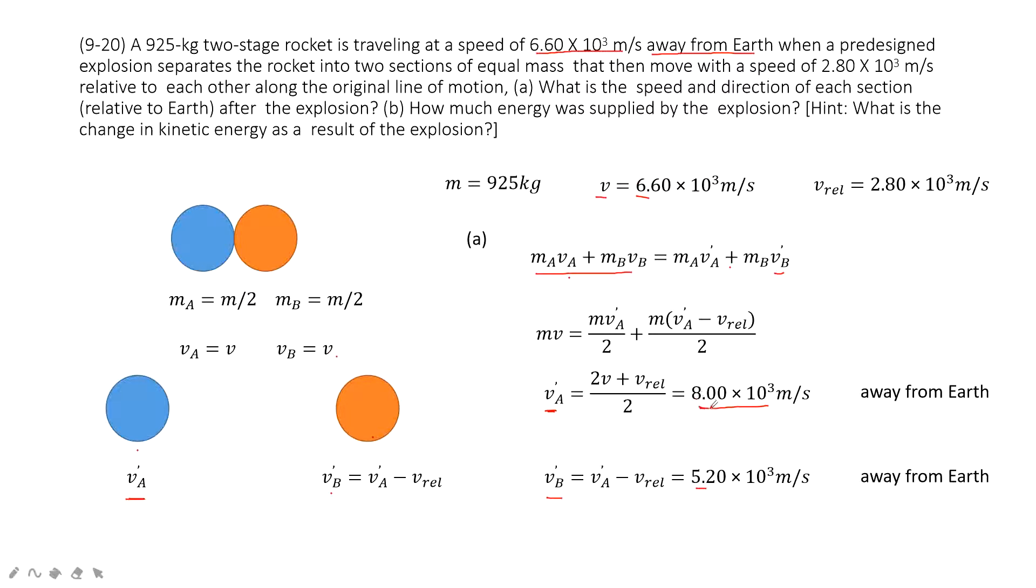And after our calculation, we find Va plus and Vb plus, both of them positive. So that means both of them are away from Earth.